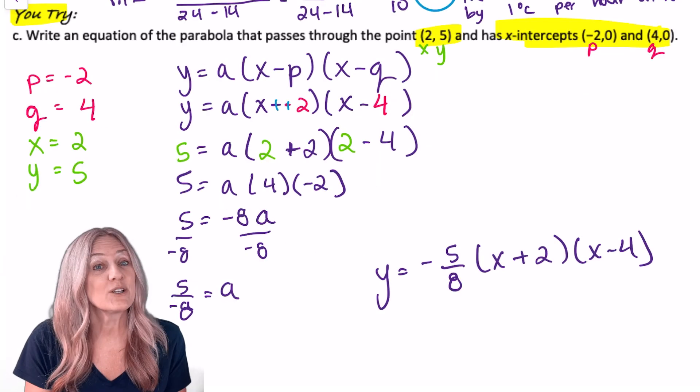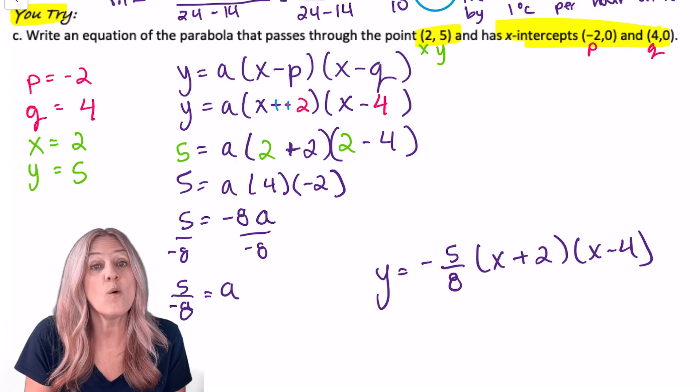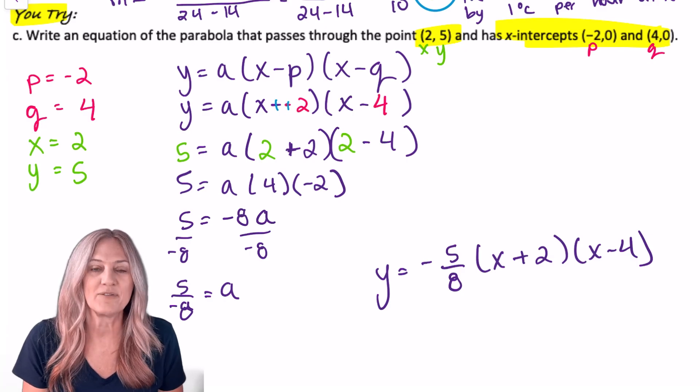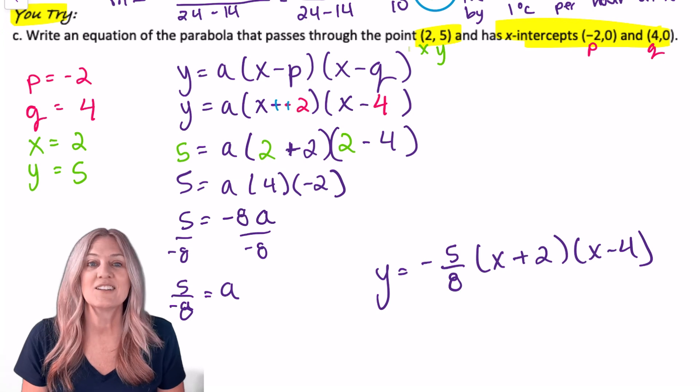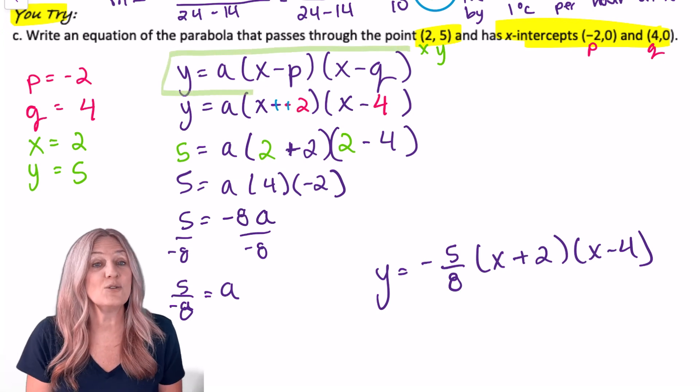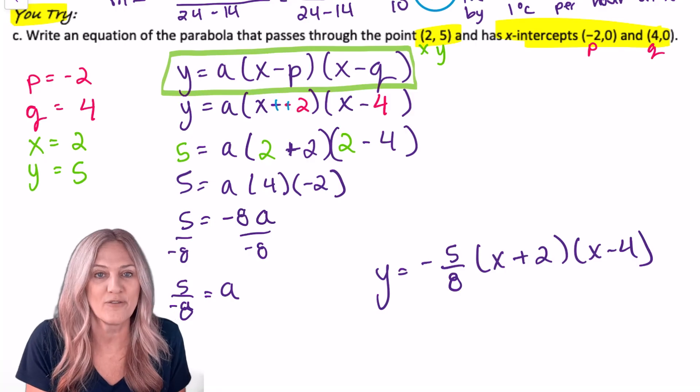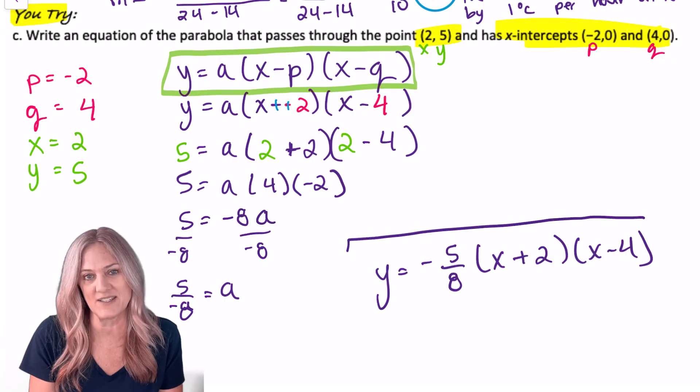In this lesson now, we've learned to write a quadratic equation given a vertex and a point or given intercepts and a point. This last example had the x-intercepts of negative 2 and 4. So we plug those in, use that extra point we're given for our x and y, solve for a, and then write the intercept form of the quadratic equation.